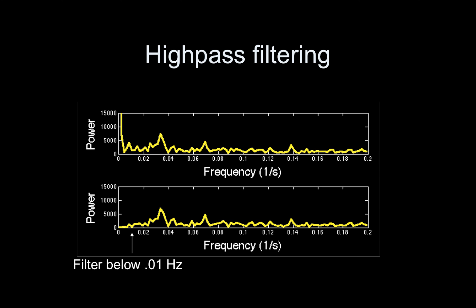Here is the result in the frequency domain. Before is up top, after is down below, and you can see it just hacked off all of the signal in these low frequencies. So again, if your task is really slow — if you have a really slow block design — you're in trouble because your signal is going to be mixed in with this noise. There's no way to pull those two apart. I compare this to taking yellow Play-Doh and blue Play-Doh, giving it to a child who smushes them together — it turns green. Once they're smushed together, they are smushed together forever. Same with the signal.